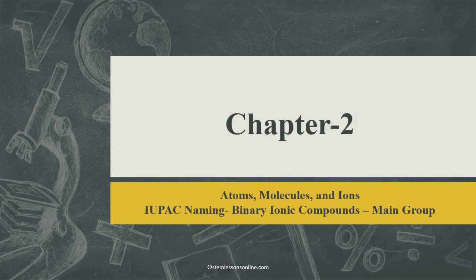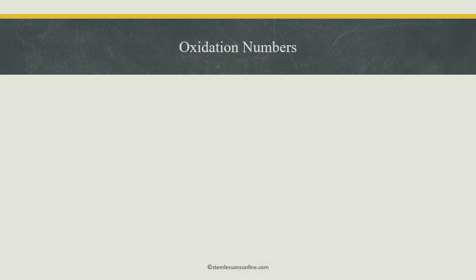In this lesson, we will learn how to name binary ionic compounds. We are using International Union of Pure and Applied Chemistry rules, which is IUPAC. It's a systematic way of naming all chemical compounds.